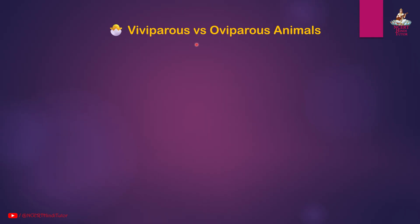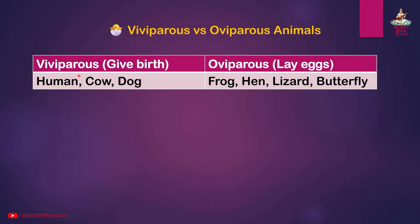Viviparous vs. oviparous animals: Viviparous animals give birth to live young — examples: humans, cow, dog. Oviparous animals lay eggs — examples: frog, hen, lizard, butterfly.